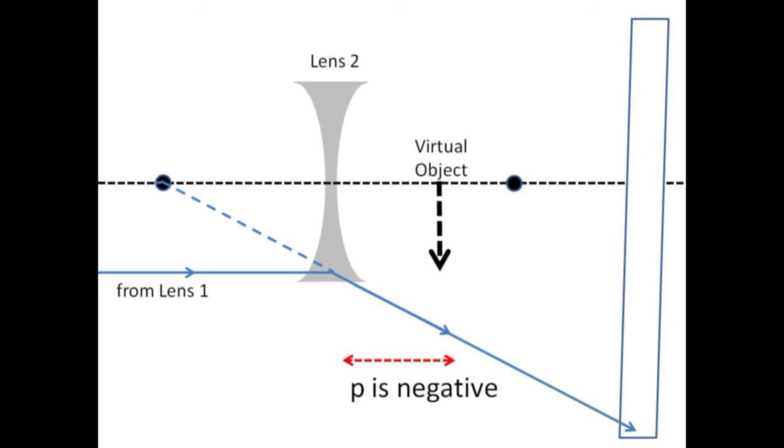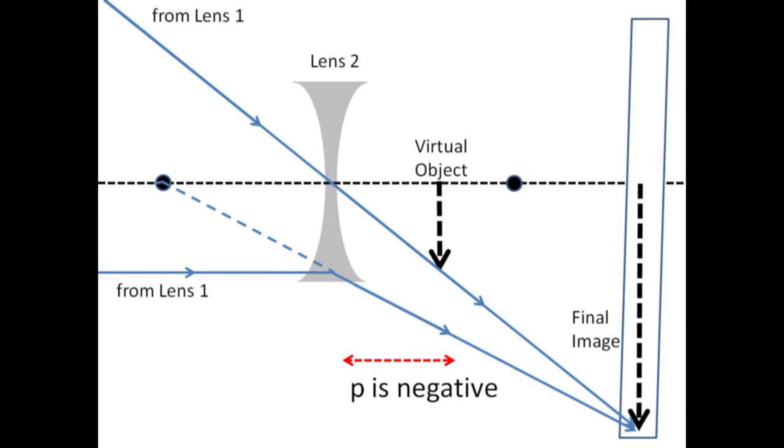For tracing rays consider a ray from lens 1 heading for the tip of the virtual object. It is then deflected by the diverging lens as though it came from the focal point. Consider a second ray coming from the first lens and heading toward the virtual object through the center of the diverging lens. It proceeds undeflected and eventually intersects the other ray to form a real final image. By using this combination of two lenses it is possible to form a real image for observation.